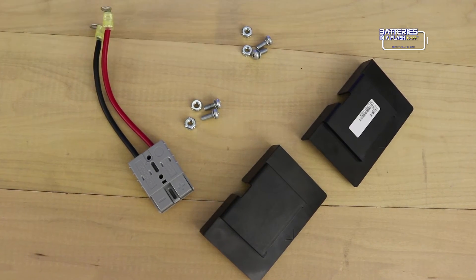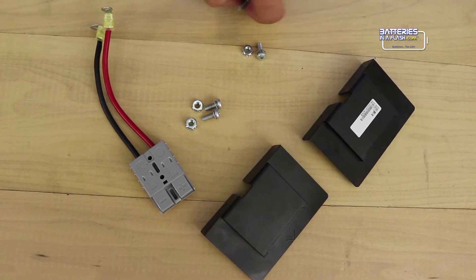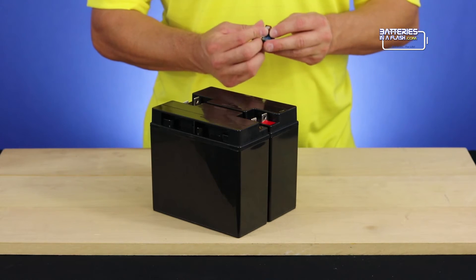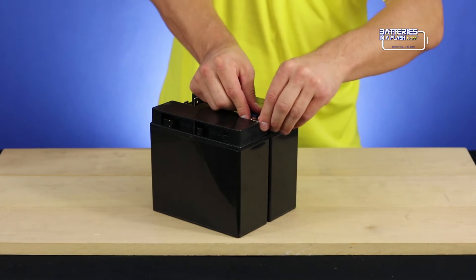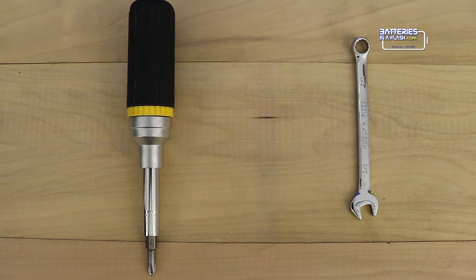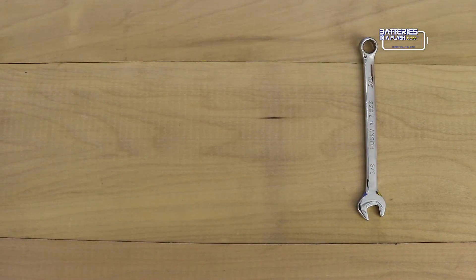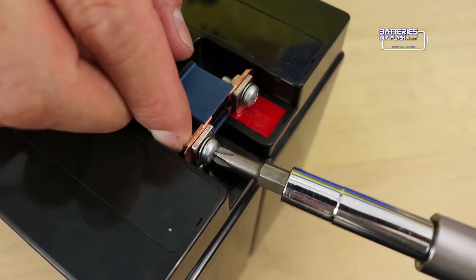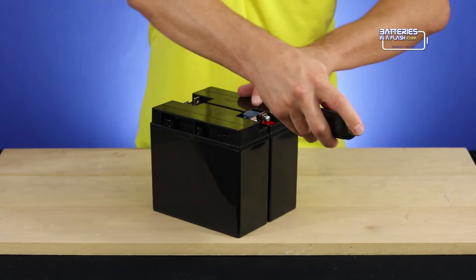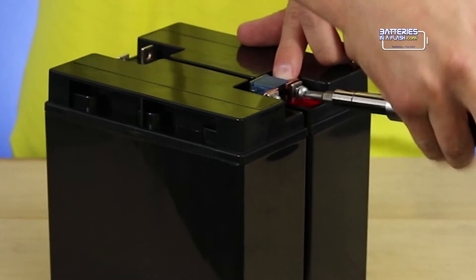We will begin by putting the inline fuse back on. I find it easier to put the nut with the fuse together and then put it in place. Once you've done that, use the screwdriver and your finger to tighten them into place. But remember to not over-tighten them, as you will not be able to redo this process in the future.